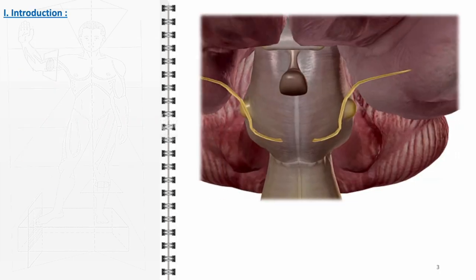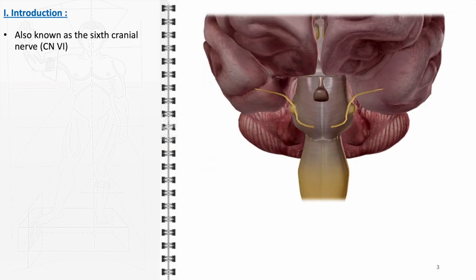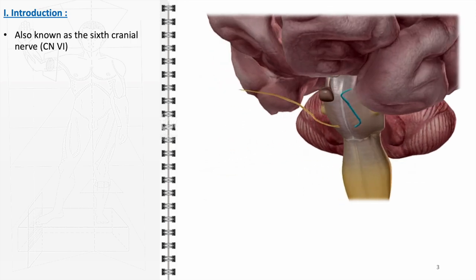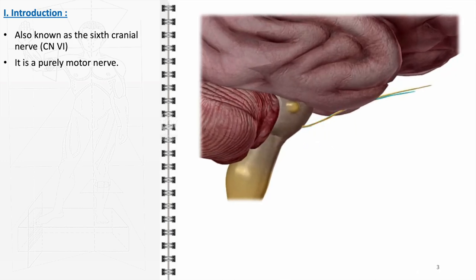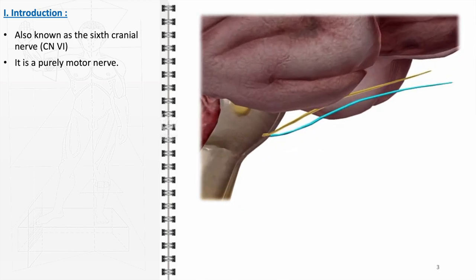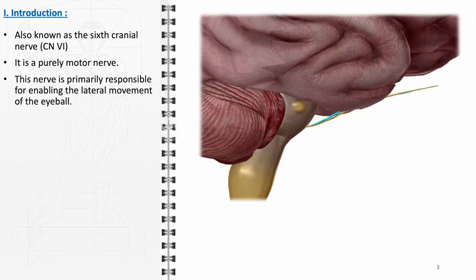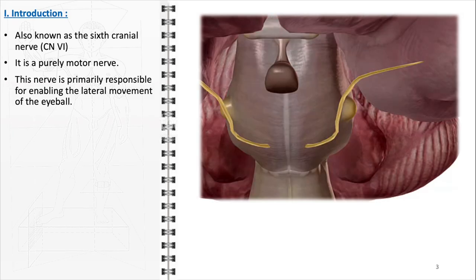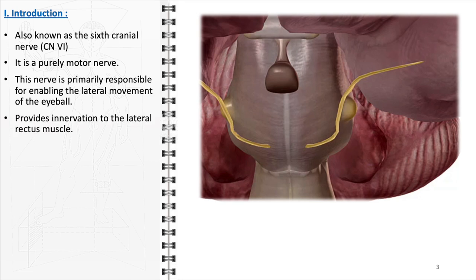The abducens nerve, also referred to as the sixth cranial nerve, plays a pivotal role in the motor function of the eye. This nerve is exclusively motor in nature, dedicated to controlling one specific action: the lateral movement of the eyeball. Such lateral movement is crucial for the coordination of both eyes in horizontal gaze, allowing us to track objects across our field of vision and maintain binocular focus. The abducens nerve achieves this by providing motor innervation to the lateral rectus muscle, the muscle responsible for pulling the eyeball outward, away from the midline of the face.